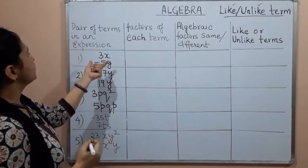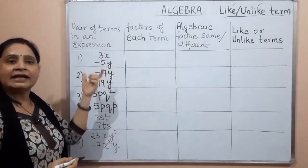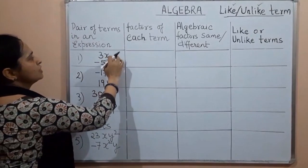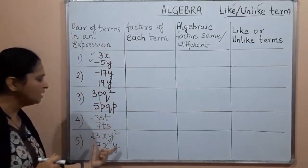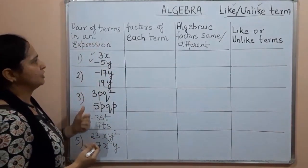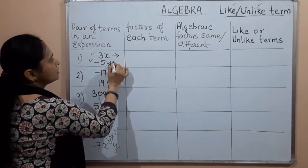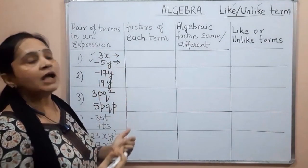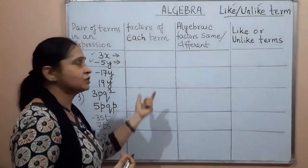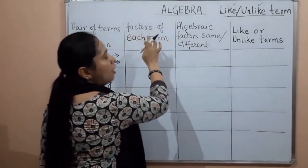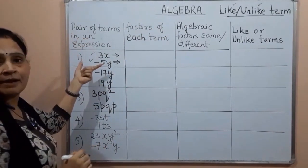Now, these are the pairs of terms of an expression. Suppose in an expression we have terms, and these are a list of pair of terms. Now suppose we want to find out whether these terms are like terms or unlike terms — we will have to undergo these steps. The first step is to find out the factors of each term.